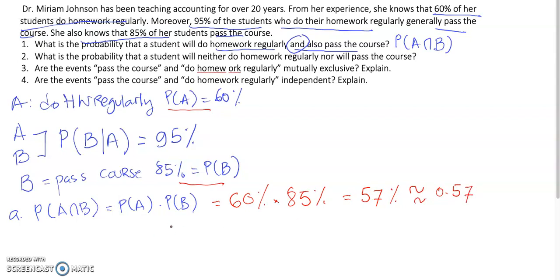we just put in the numbers 60% times 95% is just equal to 57% or 0.57. So, the probability that a student will do homework regularly and pass the course is 0.57.